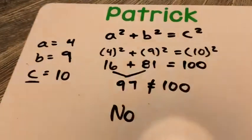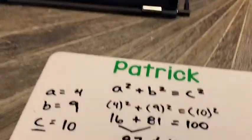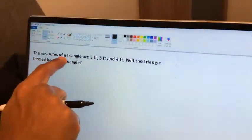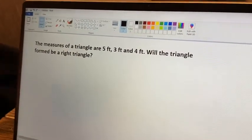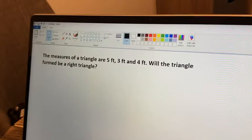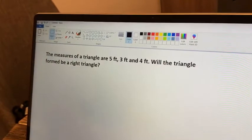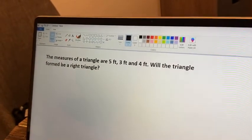Now, if we have a problem that looks somewhat different, like let's say this problem. It says the measures of a triangle are five feet, three feet, and four feet. Will the triangle formed be a right triangle?